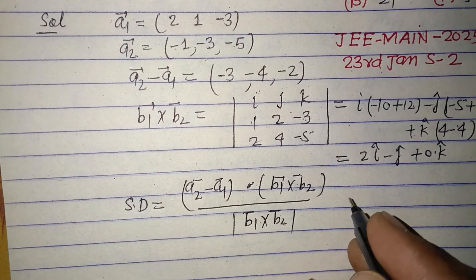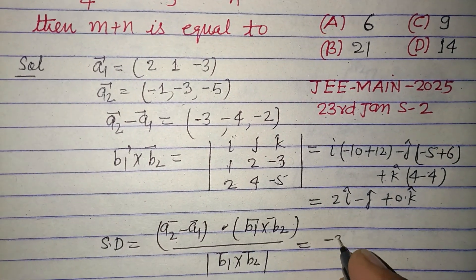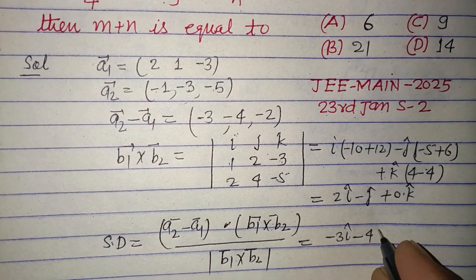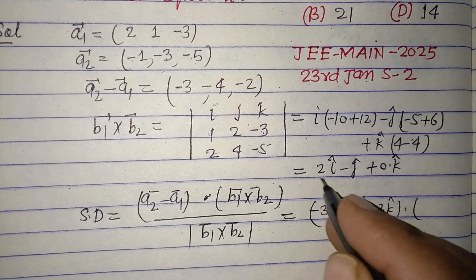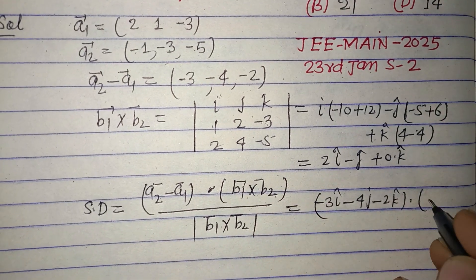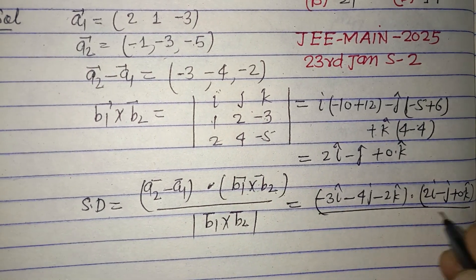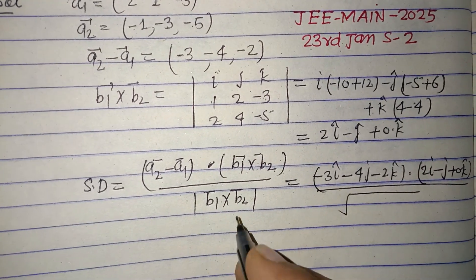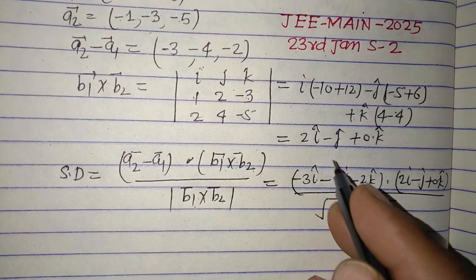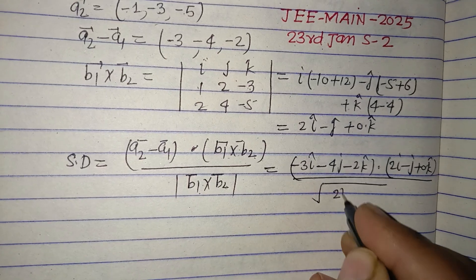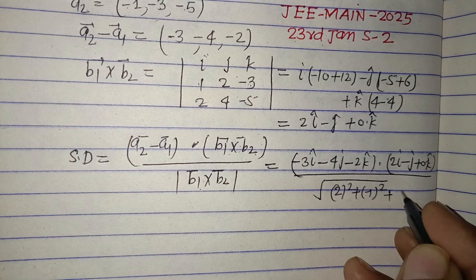Putting these values: a2 minus a1 is (-3i cap - 4j cap - 2k cap) dot with b1 cross b2 which is (2i cap - j cap + 0k cap), over the mode of b1 cross b2, which is square root of (2 squared plus (-1) squared plus 0).